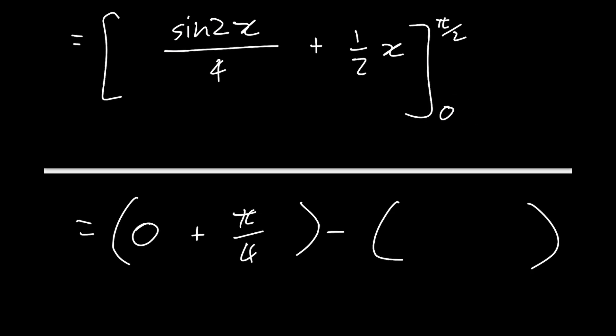Now we substitute in 0. Sine of 2 times by 0 is the same as sine of 0, and sine of 0 is 0. So 0 divided by 4 is 0. And then we substitute in 0 here, and 1 over 2 times 0 is 0. So this leaves us with the final answer of pi by 4.